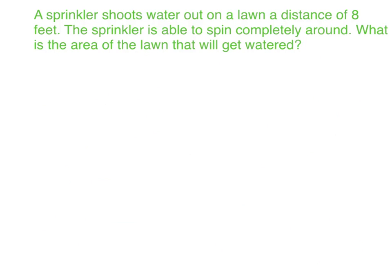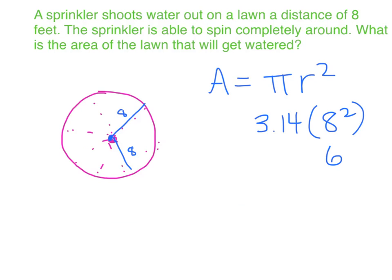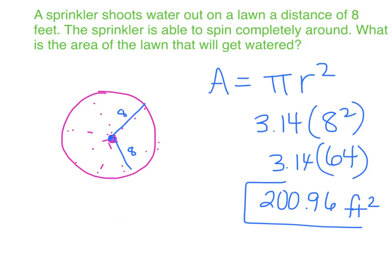Last one — we have a sprinkler that shoots water out and keeps spinning, covering a circular area. We want to know how much lawn the sprinkler can water. It shoots out a distance of 8 feet, so that 8 feet is the radius. Since it spins all the way around, it covers the area of a full circle. So I do pi r squared: 3.14 times 8 squared, which is 3.14 times 64. Typing that in, I get 200.96 feet squared — that's how much area the sprinkler will cover.